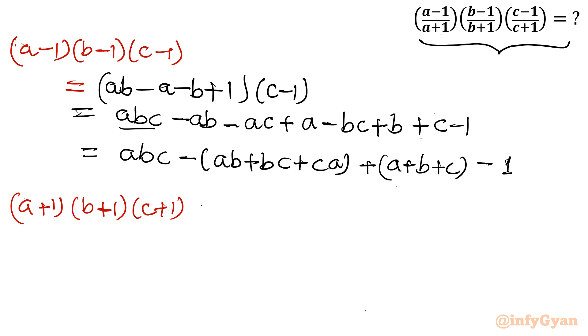Similarly, this expression, the denominator one, I can write ab + a + b + 1, then times (c+1). Let's expand this. ab with (c+1) gives abc + ab. a with (c+1) gives ac + a. b with (c+1) gives bc + b. And 1 with (c+1) gives c + 1.